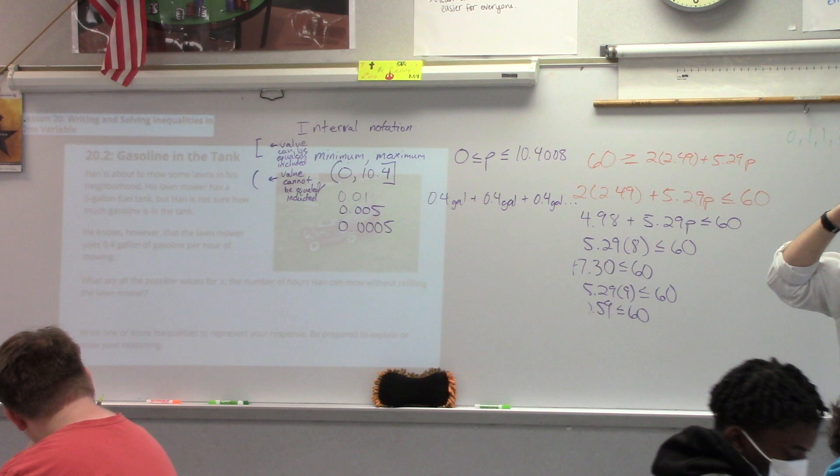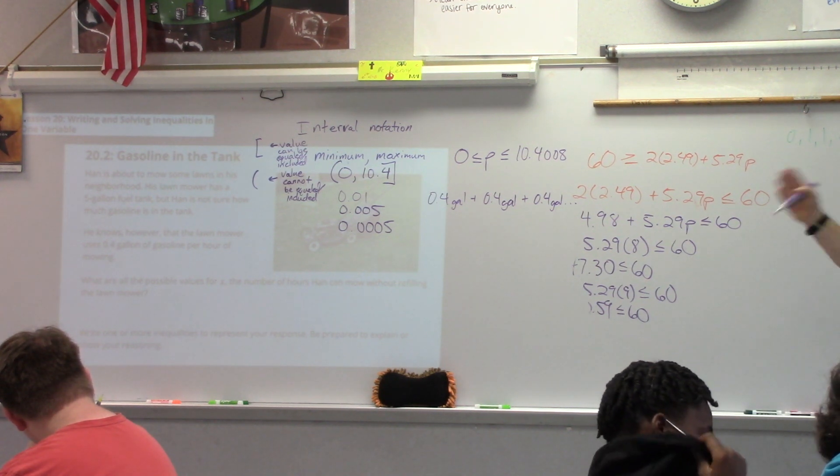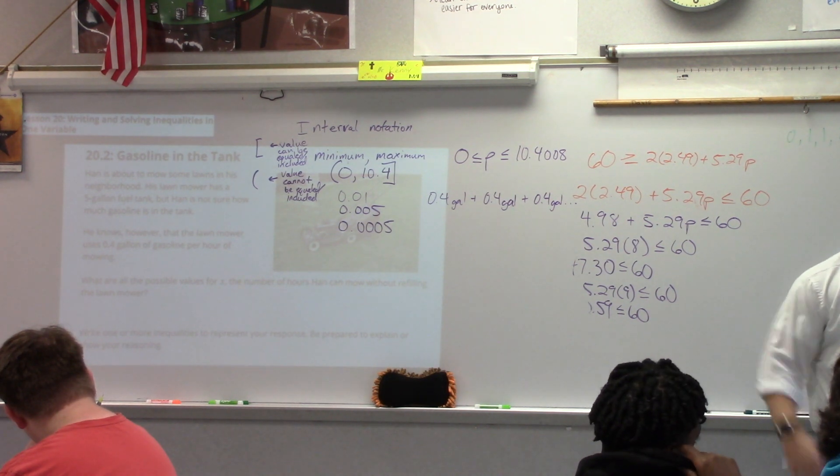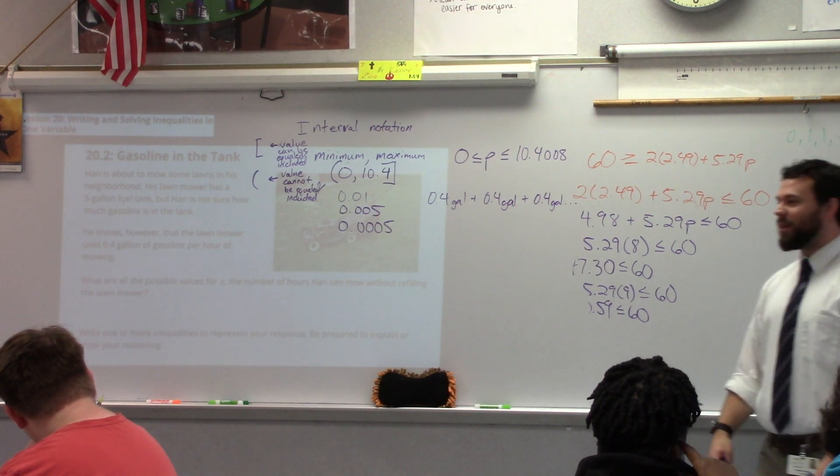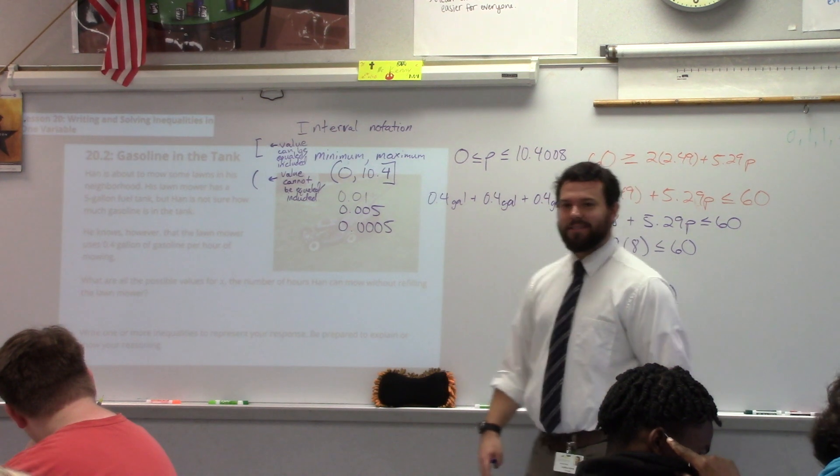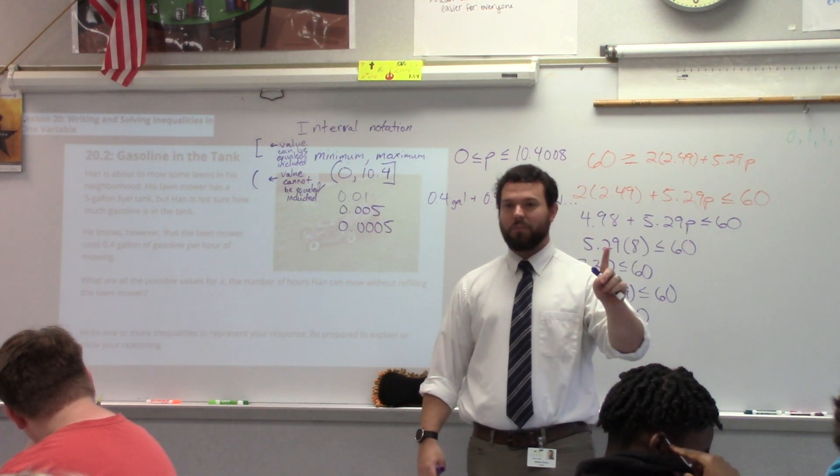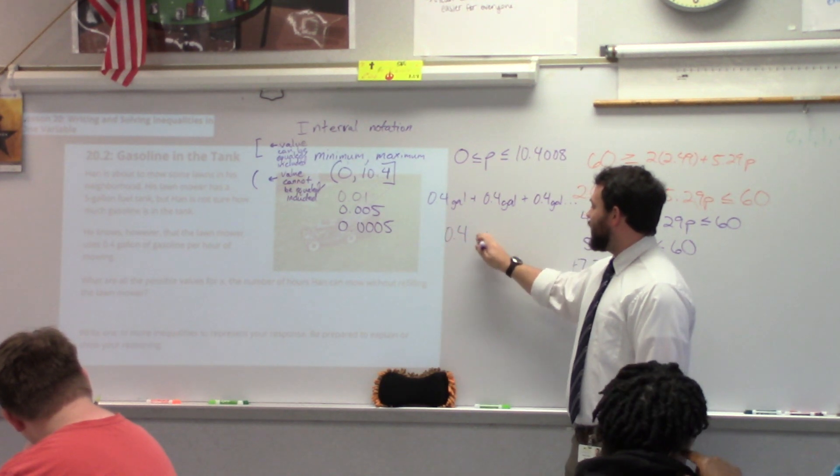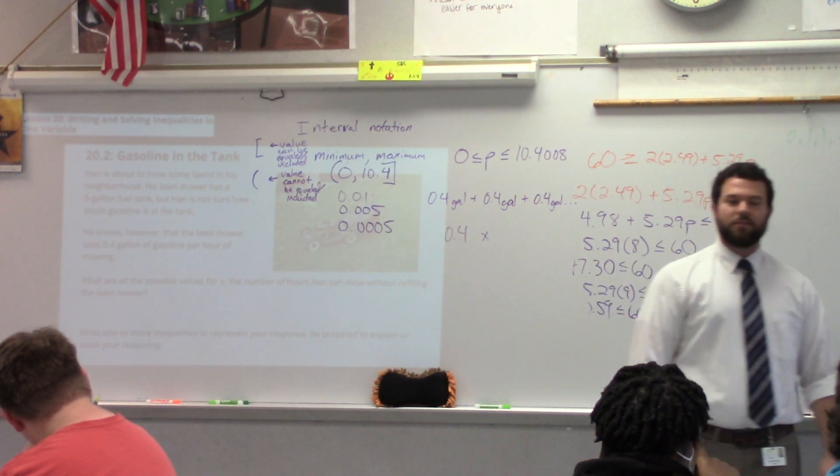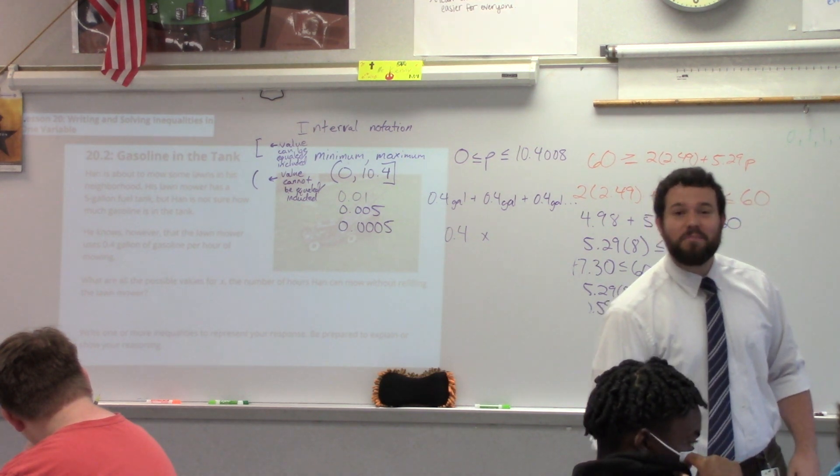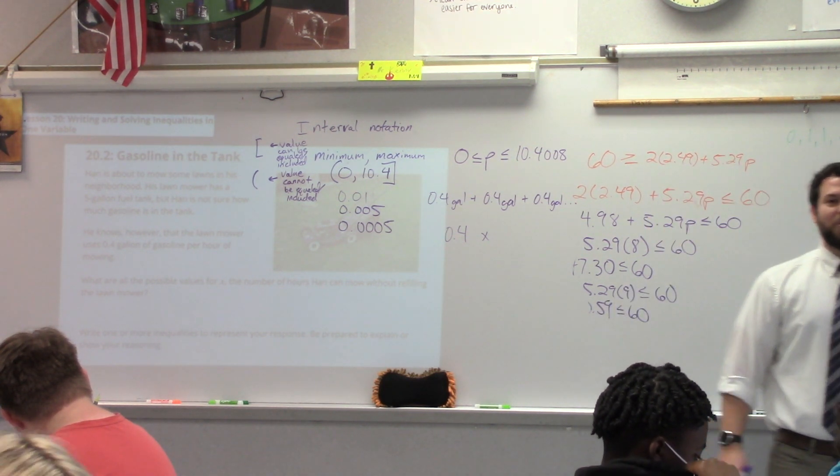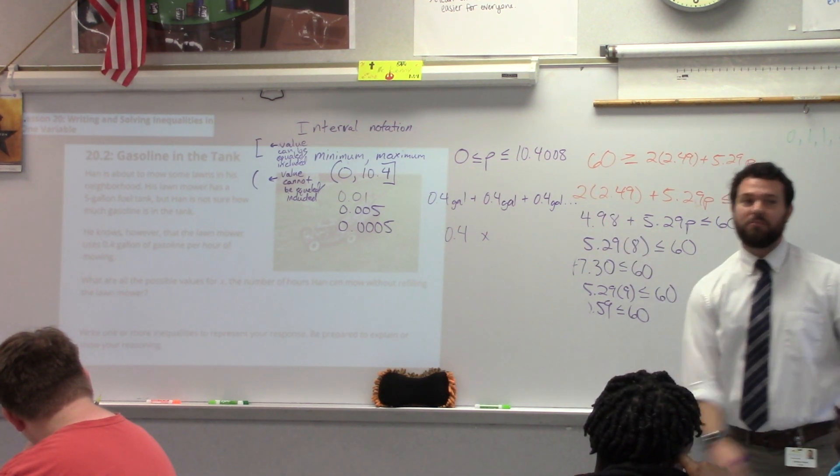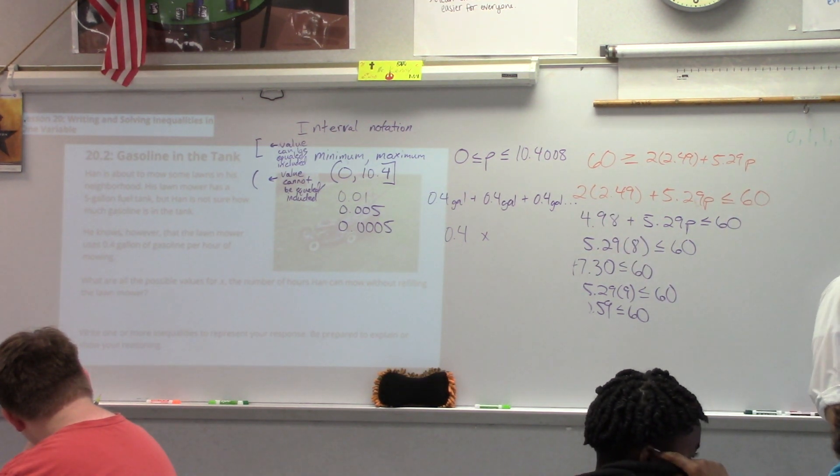And I think Lexi said one of my favorite things, because I kept asking her, well how many times are we going to add 0.4 up? And she's like, I don't know. Yes! We don't know. So what can we use? We can use a variable. So I've got 0.4, I've got a variable. And what do I need to do with those two things? Mix them.